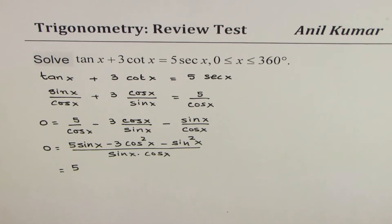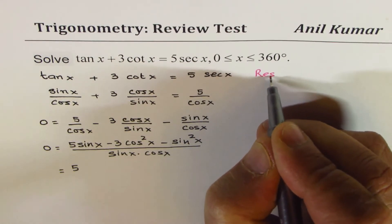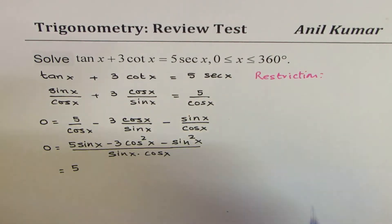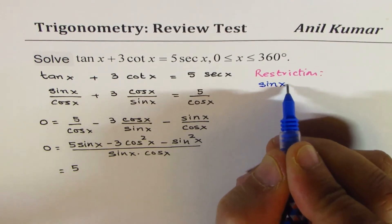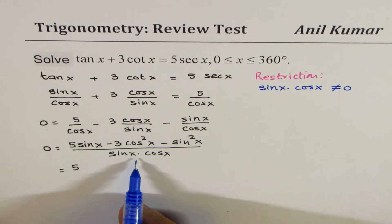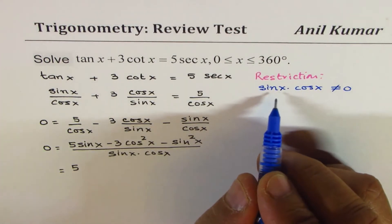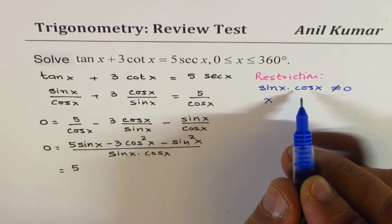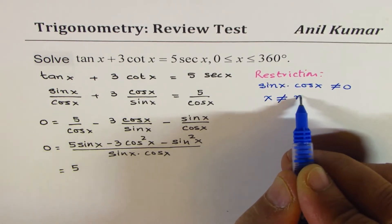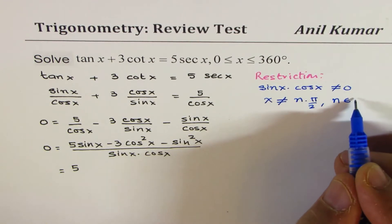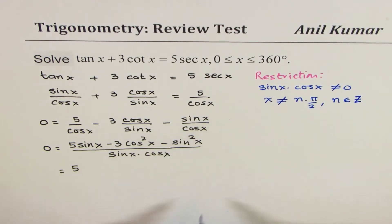At this stage, we can also say that restriction is sine x times cosine x should not be equal to 0, because denominator cannot be 0. So that will lead to elimination of few x values, like x cannot be 0, pi by 2, pi, 3 pi by 2, and so on. So we can say x is not equal to n pi by 2, where n belongs to integers. So that is the restriction.